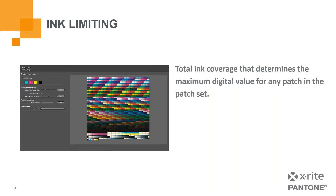Patch set ink limiting is a total ink coverage that determines the maximum digital value for any patch in the patch set. When creating a CMYK test chart, the default value is 400 — that's 400%, which represents 100% for each CMYK channel. Lowering the total ink coverage will reduce the total amount of ink used when printing the target. It's highly recommended to use the highest total ink limit. I only recommend using this ink limiting function if you notice poor ink adhesion, running, mottling, or any other image quality defects in the printed test chart, typically due to excessive ink. If you're working with a RIP software that has its own ink limiting capabilities, I recommend leaving the value in i1 Profiler at the default maximum value.